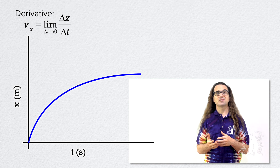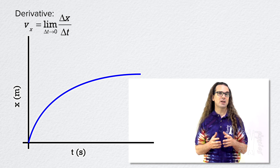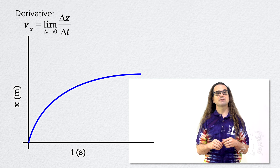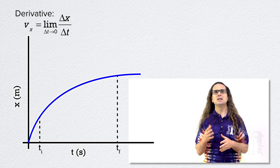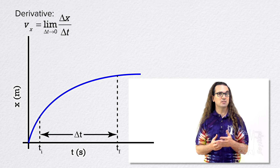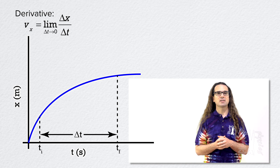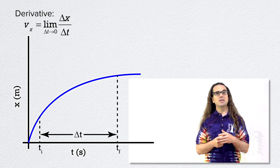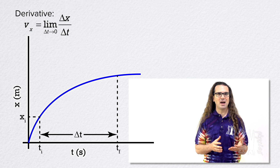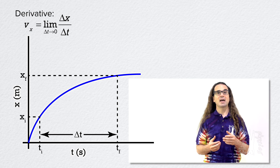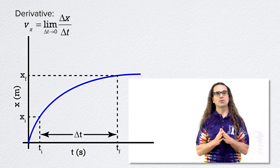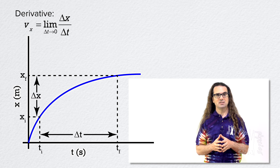The blue line represents the position as a function of time for an object. Let's talk about what happens to the object from time initial to time final — during the change in time delta t represented on the graph. You can see the object starts at the initial position x sub i and ends at the final position x sub f. Therefore, the object has gone through a displacement delta x.